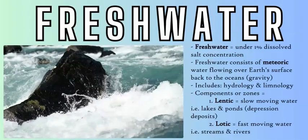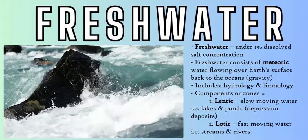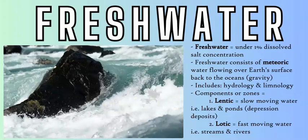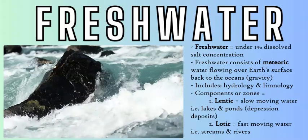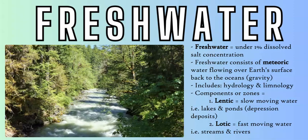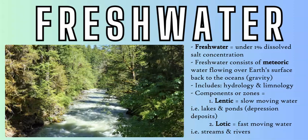The freshwater biome is part of the aquatic biome classification and has a salt concentration of less than one percent. It includes all the limnology and hydrology on land — rivers, lakes, streams, and brooks — from the largest rivers like the Amazon, Nile, Ganges, and Yangtze to small brooks and creeks along the coastlines of the continents. This includes surface water and underground groundwater reservoirs. There are two main types: lentic, which is slow-moving or standing water like lakes and ponds, and lotic, which is fast-moving water like streams and rivers.